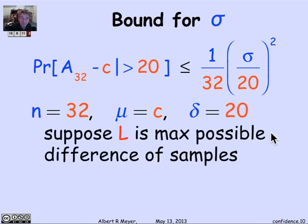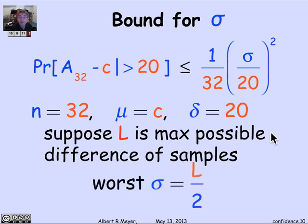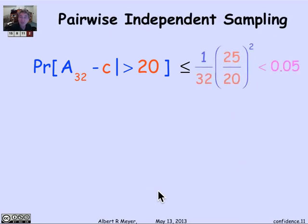If L is the maximum possible difference we'll ever measure among samples, then the worst possible standard deviation when your random variable ranges over an interval L is L over 2. You can check that algebraically, but let's take that as a fact: if you know that your measurements will differ by at most L between max and min, the standard deviation can't be more than L over 2. If we know that L is 50, then I finally have a number to plug in — I can plug in 25 for sigma.